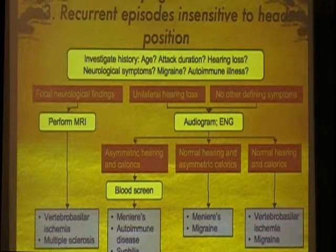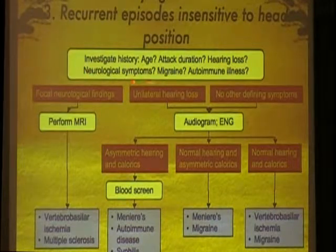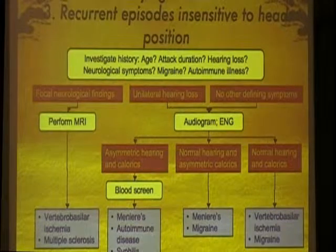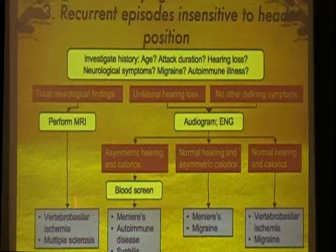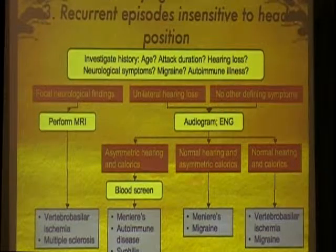Now, when you have recurrent episodes and they are not sensitive to head movement, consider the age of the patient, how long the episodes occur, hearing loss, neurologic symptoms, and migraine. Most of the time, the problem is more of anxiety. Recurrent on-and-off episodes with no sensitivity to head movement — most of the time it's anxiety. You could also look at vertebrobasilar vascular insufficiency. Consider Meniere's disease when your patient has hearing loss. But when there are no other symptoms, it could be migraine or vertebrobasilar vascular insufficiency.